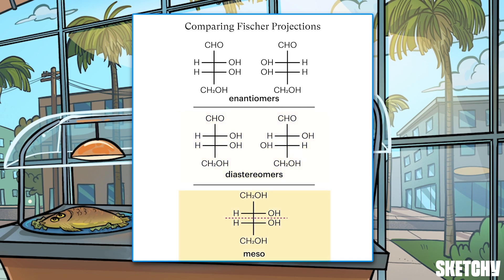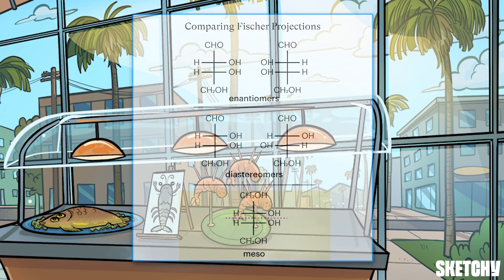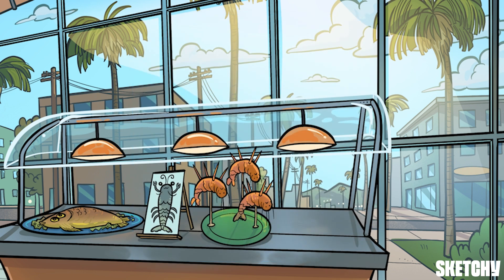A meso compound will have an internal mirror plane in its Fischer projection, just as it would in a dash-wedge drawing. But what happens to stereochemical information if you want to move or manipulate your Fischer projection?